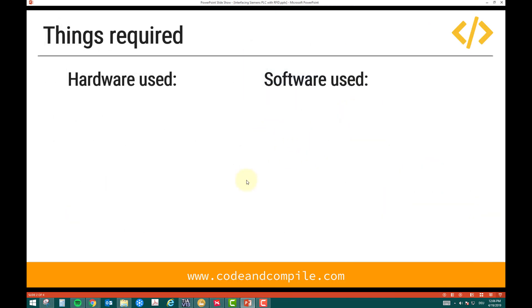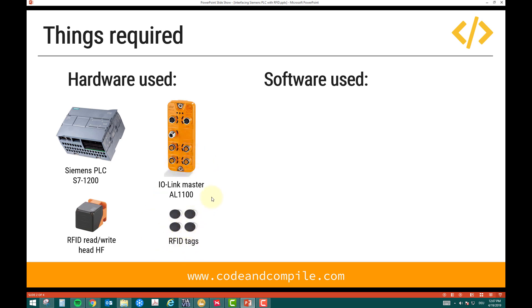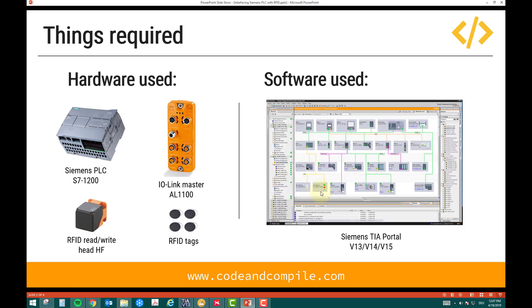To achieve this application, you need a Siemens PLC, and then you need an IO-Link master AL1100 — I'm using an IO-Link master from IFM because my RFID read/write head supports the IO-Link interface. IO-Link is an interface that allows you to read and write information quite conveniently compared to other methods. I would highly recommend checking out my video on the IO-Link master — the link is in the description. You will also need some RFID tags. The software I'm using is Siemens TIA Portal with some additional free libraries downloadable from the IFM website, which are required to configure the IO-Link master.